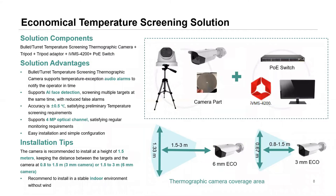Next is our eco range. Within this range we're offering it in a turret-style and a bullet-style camera. Similar to the professional range, installation is straightforward — plug it into a PoE switch, connect to the network, install iVMS-4200, and witness real-time elevated temperature alarms and temperature readings overlaid on the stream. It's also a bi-spectrum camera with both an optical and thermal lens.